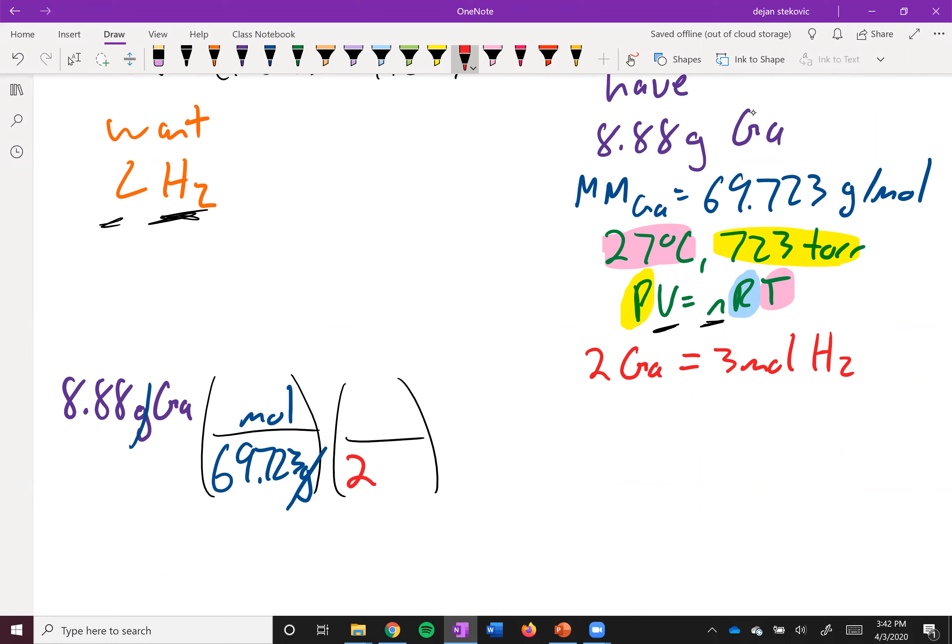So we have gallium up top. So it goes on the bottom. So two gallium, three H2. Gallium and gallium cancels out. Now we get our moles of H2.